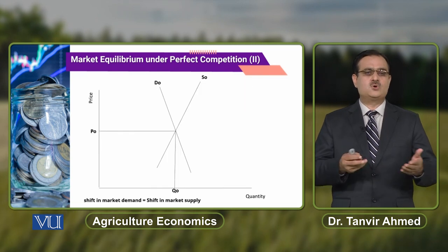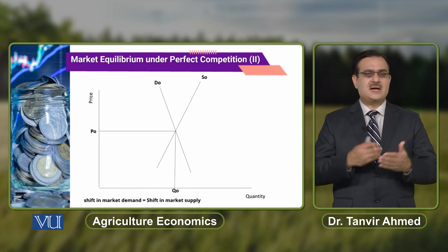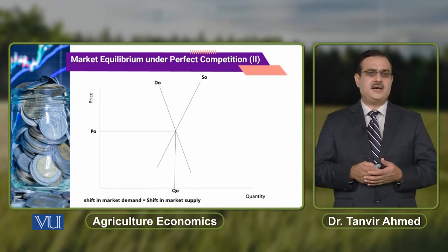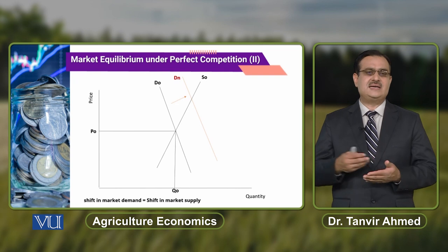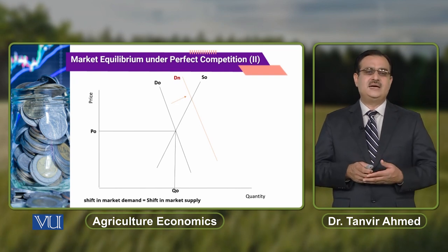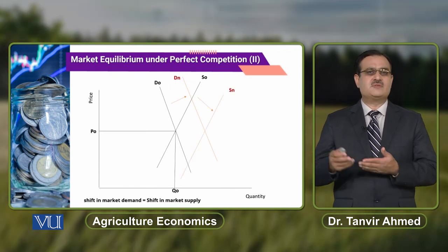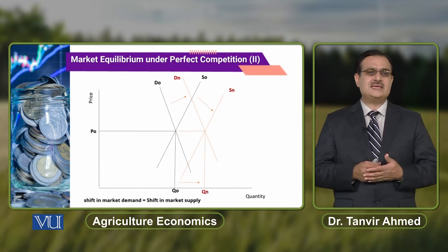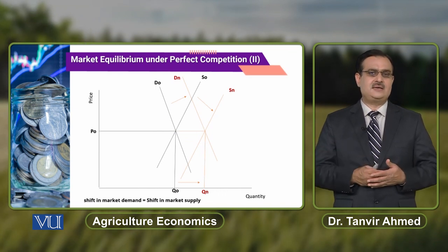To illustrate these things, suppose we use the standard diagram with quantity on the horizontal axis and price on the vertical axis. We consider a simultaneous increase in both supply and demand. If we assume there is an increase in demand, the demand curve shifts from D0 to DN. At the same time there is also an increase in supply, and the supply curve shifts from S0 to SN. Under the new market condition, equilibrium price is P0 and equilibrium quantity is QN.